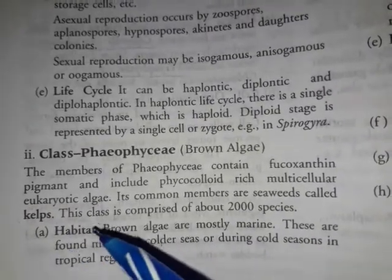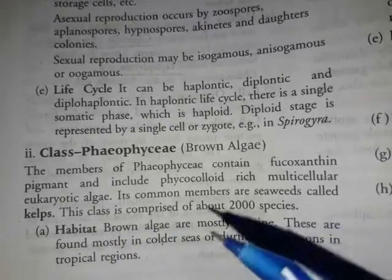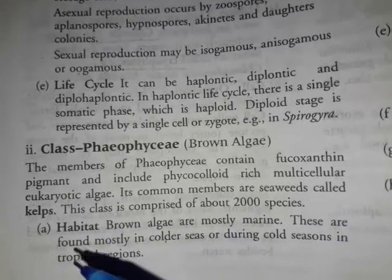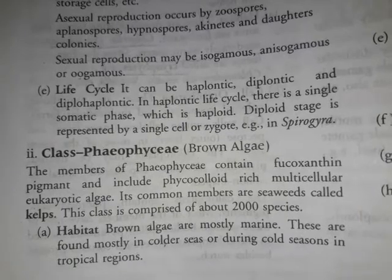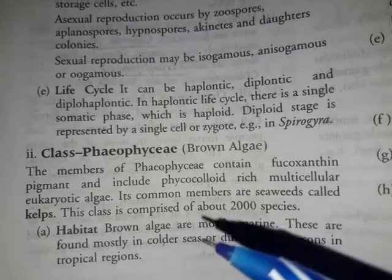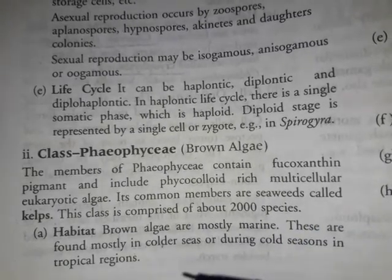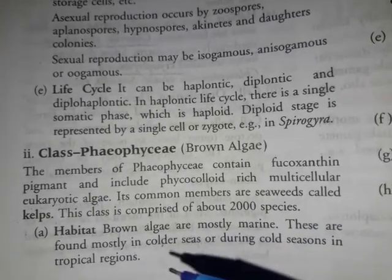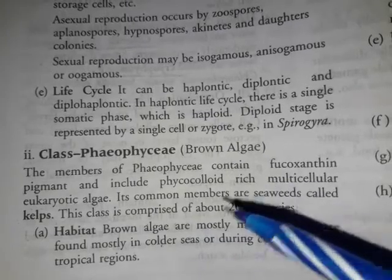This class comprises about 2,000 species. The first point is habitat — mostly marine, as we have studied in algae. Chlorophyceae members are also marine.